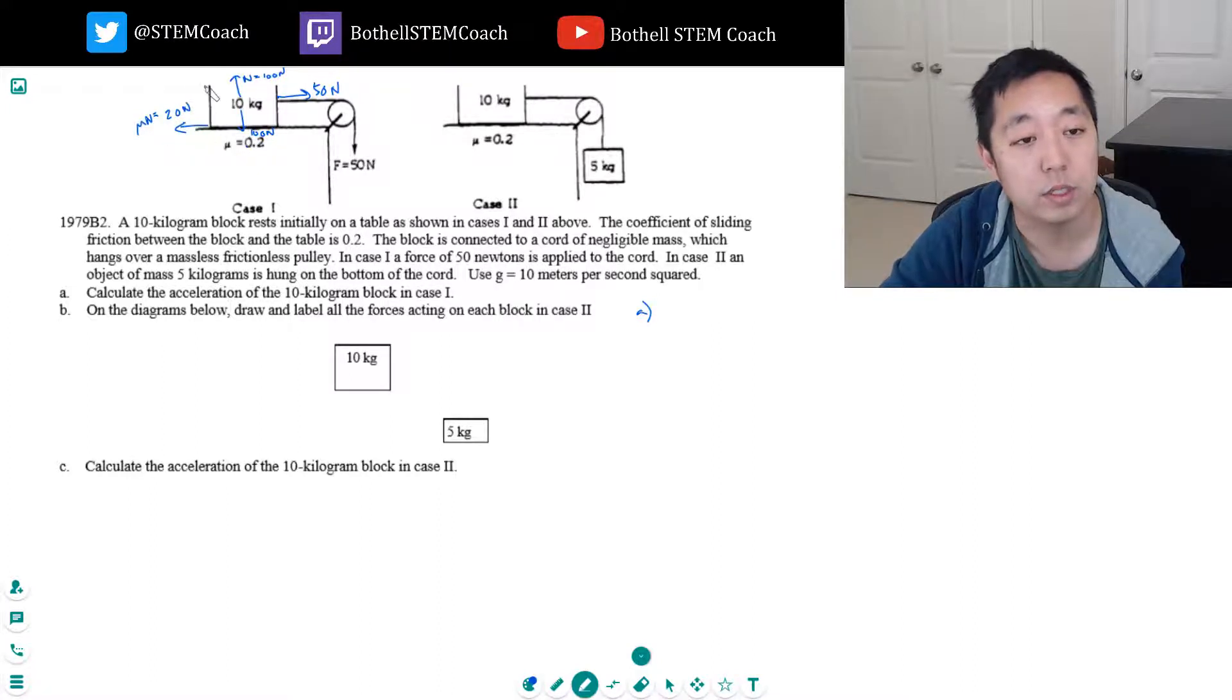So the net force horizontally, in the x direction, is 30 newtons. And that equals 10 kilograms times its acceleration. F equals ma. So a is equal to 3 meters per second squared.